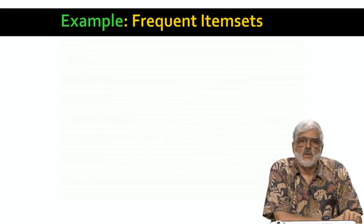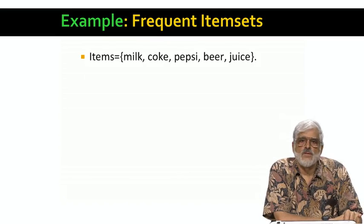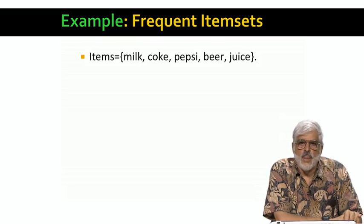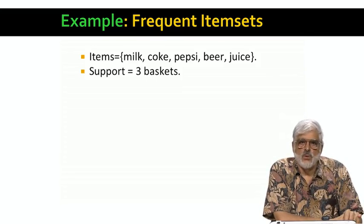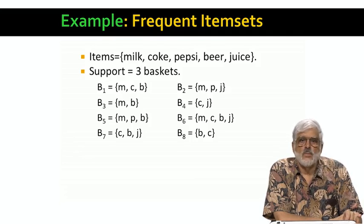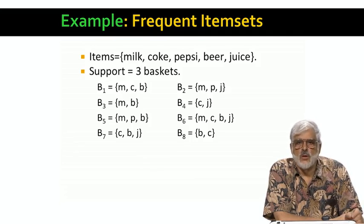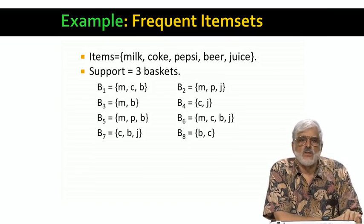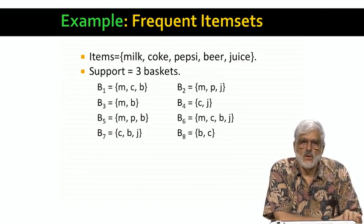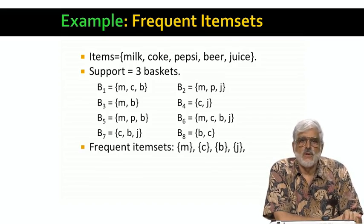Here's a very simple example of data in the market basket model. There are five items: milk, Coke, Pepsi, beer, and juice. The support threshold will be three, an absolute number not a percentage of the baskets. Here are the baskets, we're using M for milk, C for Coke, and you can probably figure out the rest. Now, what are the frequent item sets?